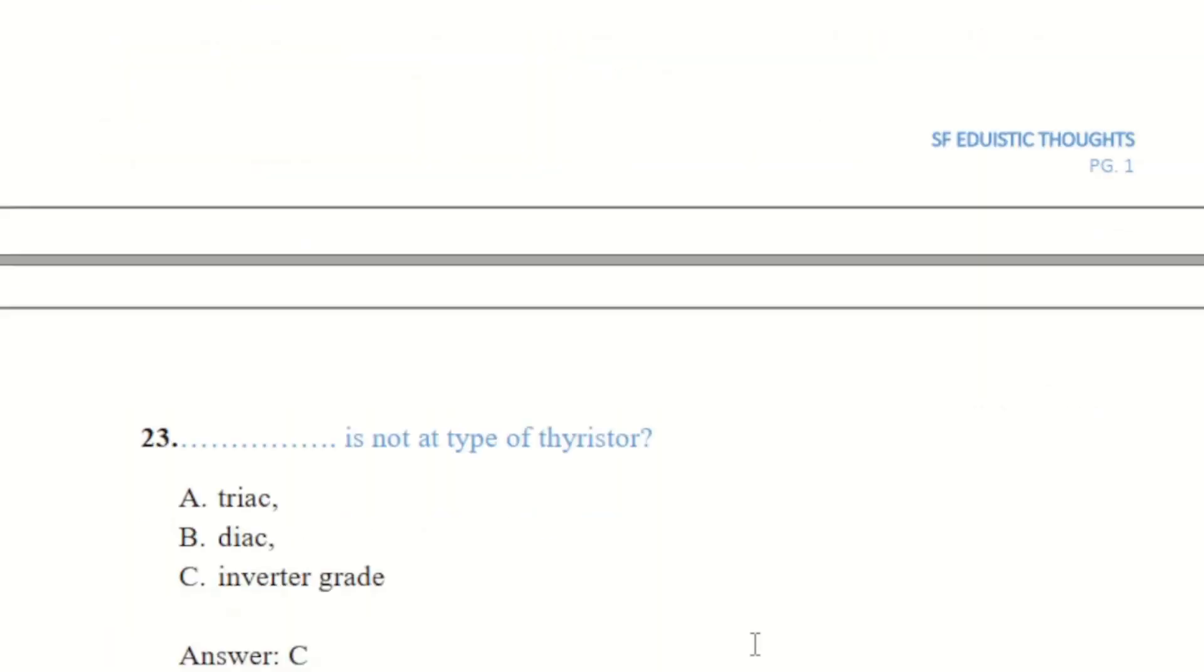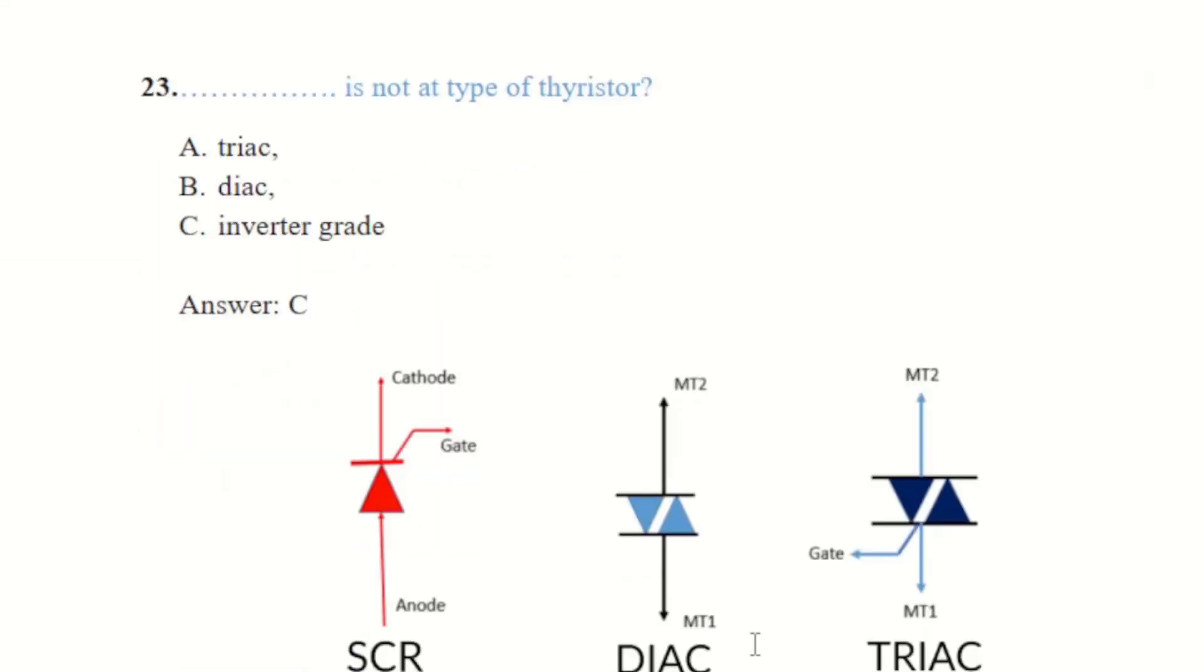Moving to the next question that is about the thyristor. It is asking about the thyristor that dash is not the type of thyristor. A is triac, B is diac, 3 is inverter grade. It is obvious that triac and diac both are the type of thyristor and you can see by the diagram they are the basic three main types of thyristor.